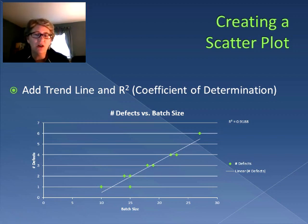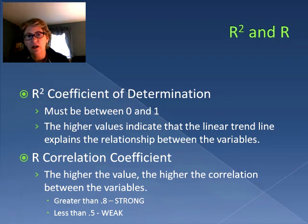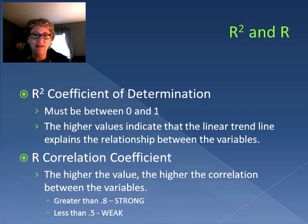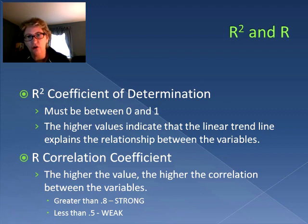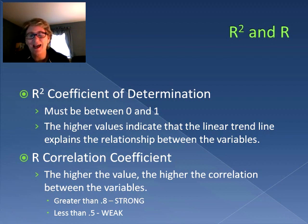When we look at the r-squared, the coefficient of determination, it must fall between zero and one. The higher the value, the more that trend line explains the relationship between the variables. We can also look at the correlation coefficient r, which is the square root of the coefficient of determination. The greater the value of r, the stronger the relationship between the two variables. We consider it strong if r is greater than 0.8, and weak if it's less than 0.5.